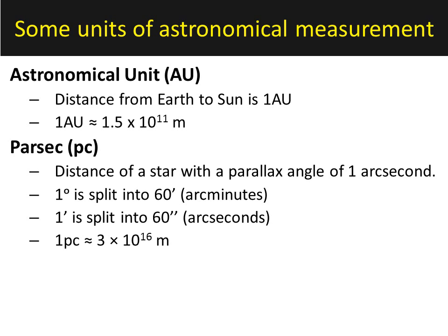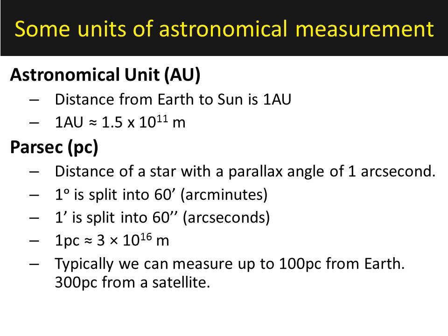One parsec is roughly equal to three times ten to the sixteen meters, so it is a little bit bigger than an astronomical unit. On Earth we can typically measure objects that have a parallax angle of one hundredth of an arc second, giving us a maximum distance of a hundred parsecs from Earth. And if we use a satellite, where we can get rid of atmospheric attenuation and the effects of clouds and atmosphere, we can measure three hundred parsecs — corresponding to a parallax angle of one three-hundredth of an arc second.